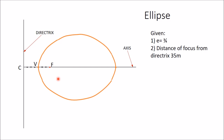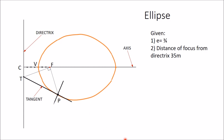Suppose you want to draw tangent and normal at a point on this ellipse — take this point as P. Join P with F, then draw a line perpendicular to PF which intersects the directrix at point T. Join T with P and extend the line — this is your required tangent. At point P, draw a line perpendicular to TP — this will be your required normal.